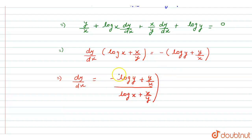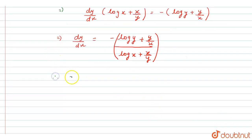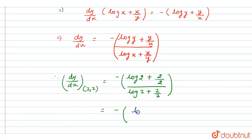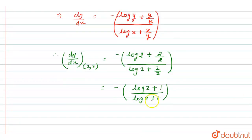Now, we directly put the given values: at x = 2, y = 2. Substituting, the numerator becomes minus (log 2 + 2/2) and the denominator becomes (log 2 + 2/2). Both numerator and denominator simplify to minus (log 2 + 1) over (log 2 + 1). Since both terms are the same, they cancel out, leaving minus 1.